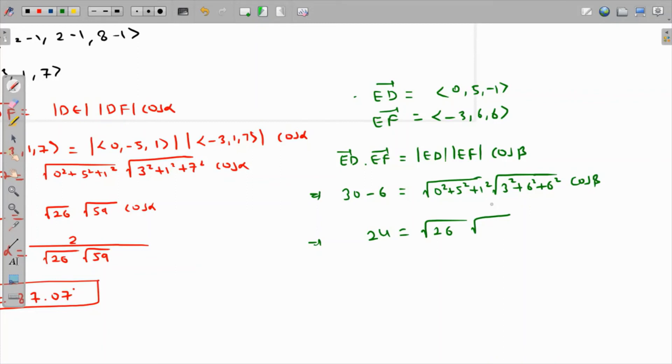If you rearrange this, cosine of beta will be 24 over root 26, and root of 81 is 9 because 9 times 9 is 81. This value comes out as 58.47 degrees up to two decimal places. Since we got alpha and beta...